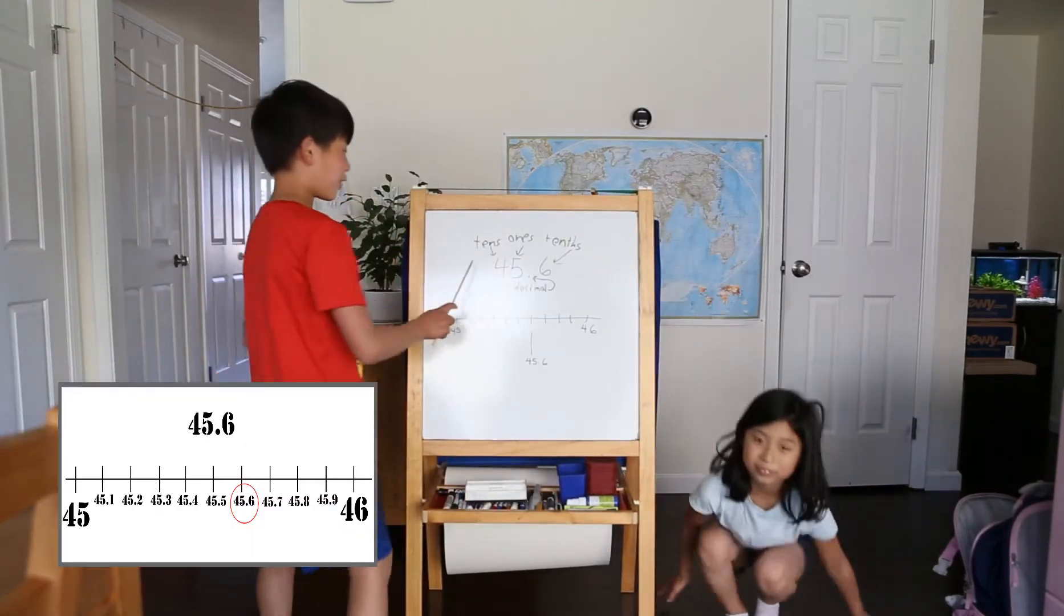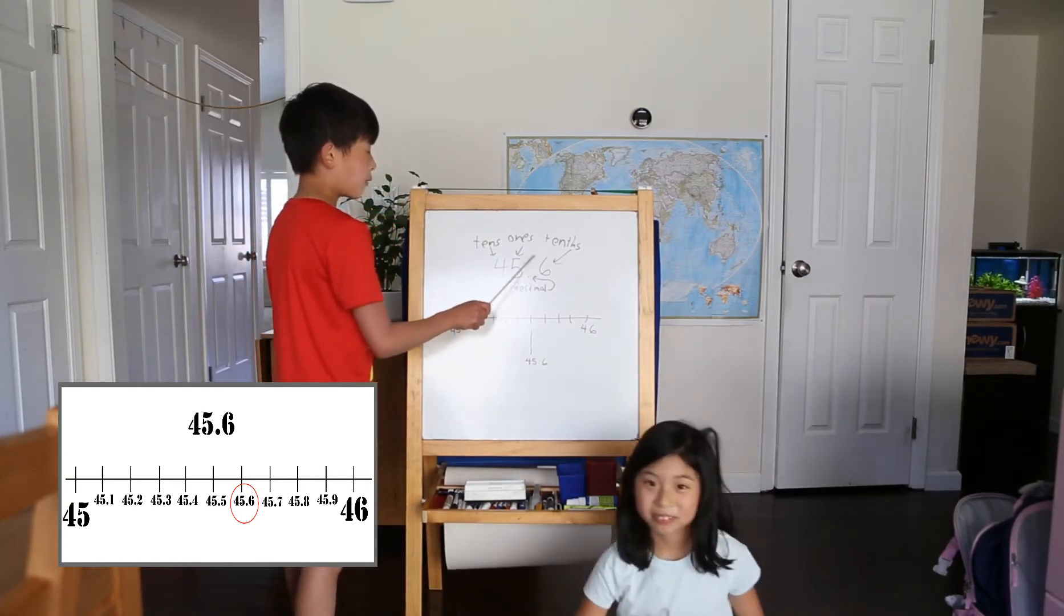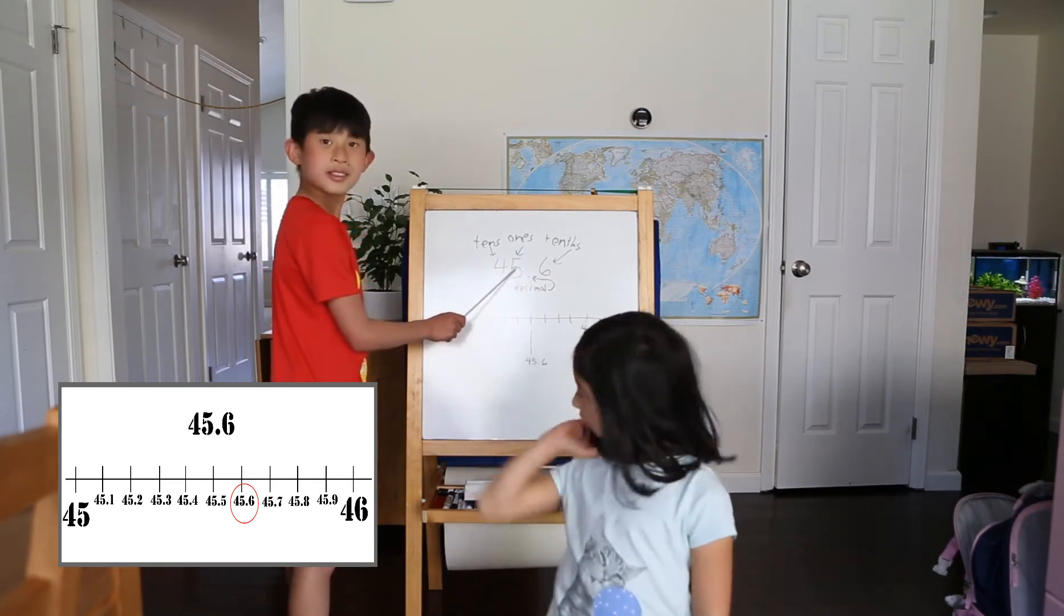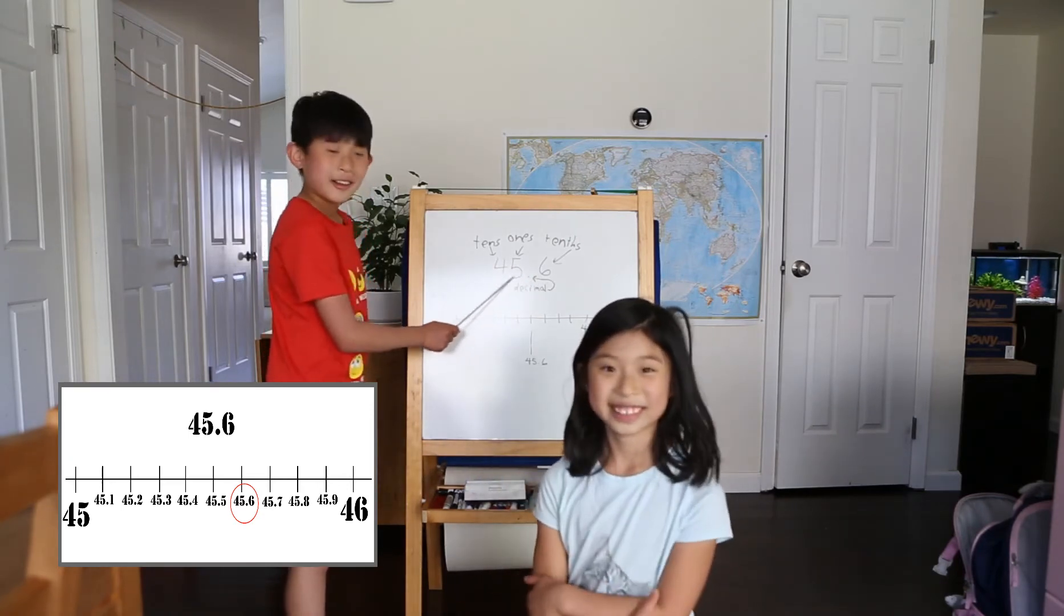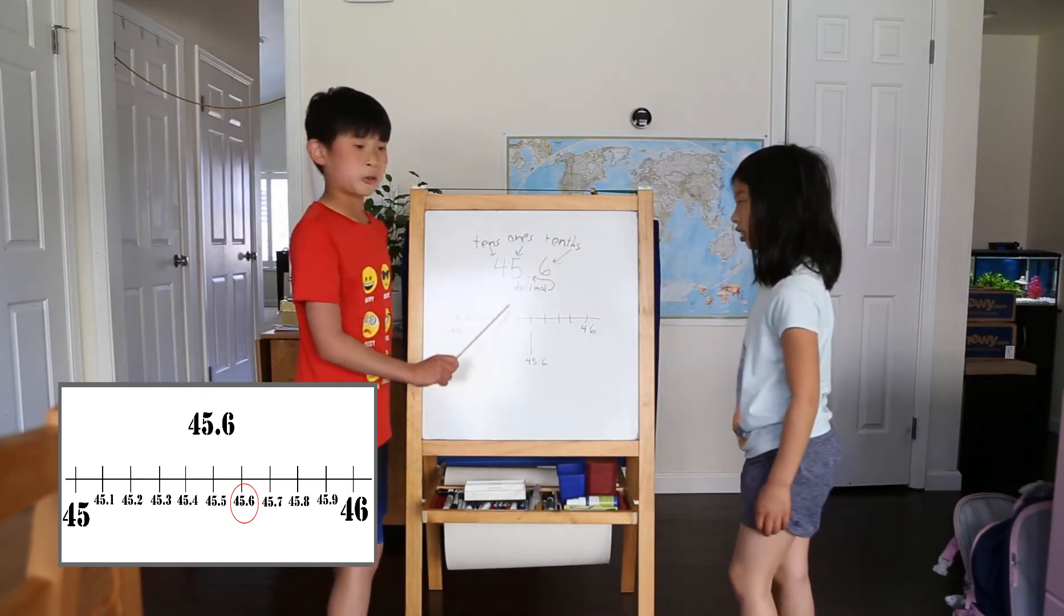Our number is 45.6. The four is in the tens place, the five is in the ones place. And the dot is the decimal. And the six is in the tens place, which is the fractional unit.